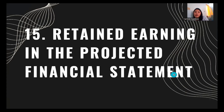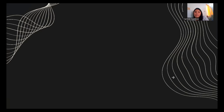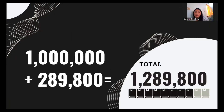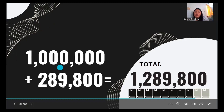Number fifteen, retained earnings: 1,000,000 plus the increase in retained earnings of 289,800 equals 1,289,800.